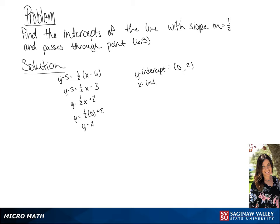Now to find the x-intercept, we're going to plug in 0 for y, giving us 0 equals 1 half x plus 2.